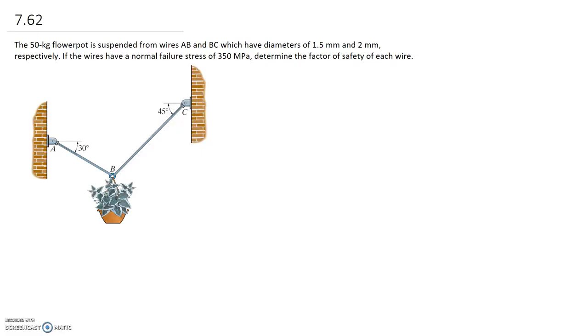So the 50 kilogram flowerpot is suspended from wires AB and BC which have diameters of 1.5 and 2 millimeters respectively. If the wires have a normal failure stress of 350 megapascals, determine the factor of safety of each wire.